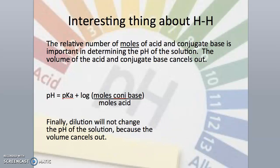Since the volume is the same for the conjugate pair, given they are in the same equilibrium, they will cancel out in the equation. For this reason, we can use moles or molarity. Realize also that diluting our buffer system will have no change on the pH, again because the volume will be the same and it will cancel out.